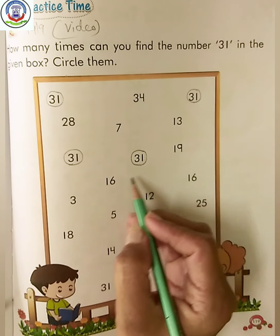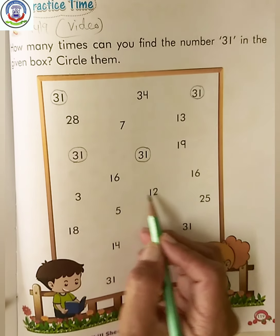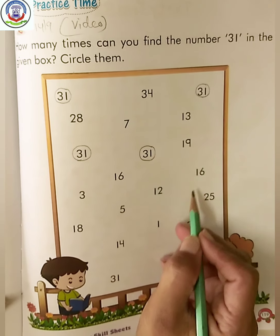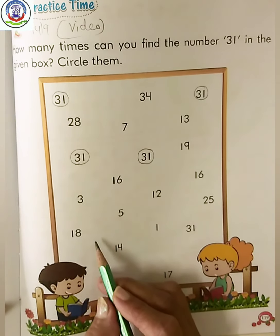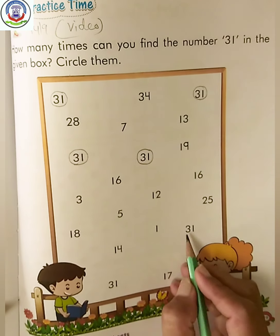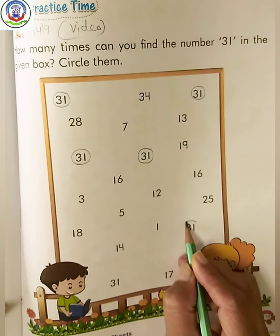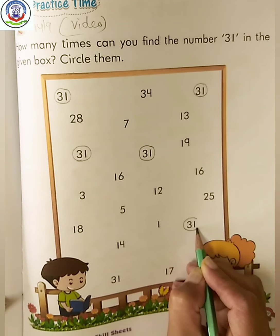Find out where is number 31. Here it comes again 31. So circle it properly.